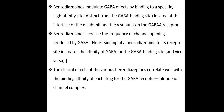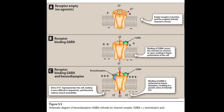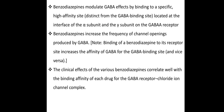Benzodiazepines modulate the GABA effect by binding to a specific high-affinity site located at the interface of the alpha subunit and the gamma subunit of the GABA-A receptor. Benzodiazepines increase the frequency of chloride channel openings produced by GABA. The clinical effects of various benzodiazepines correlate well with the binding affinity of each drug at the GABA receptor chloride ion channel complex.